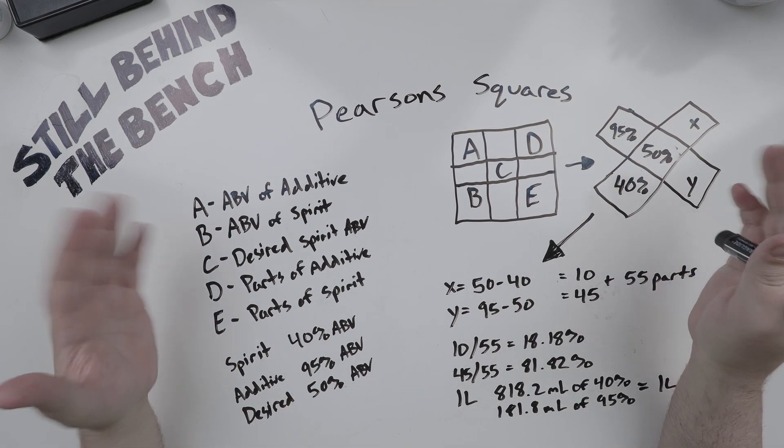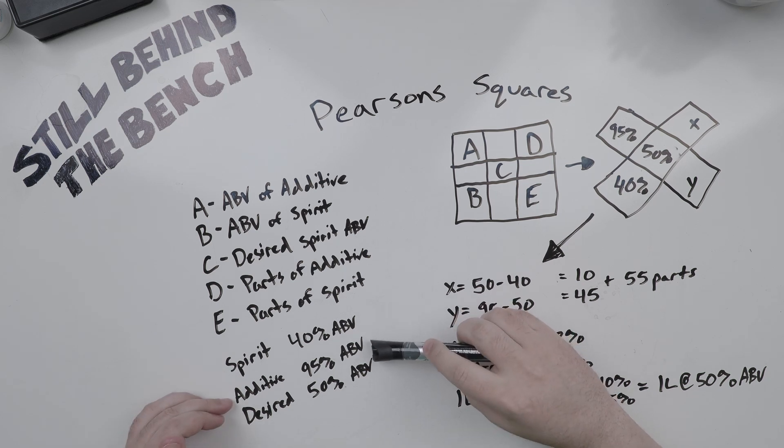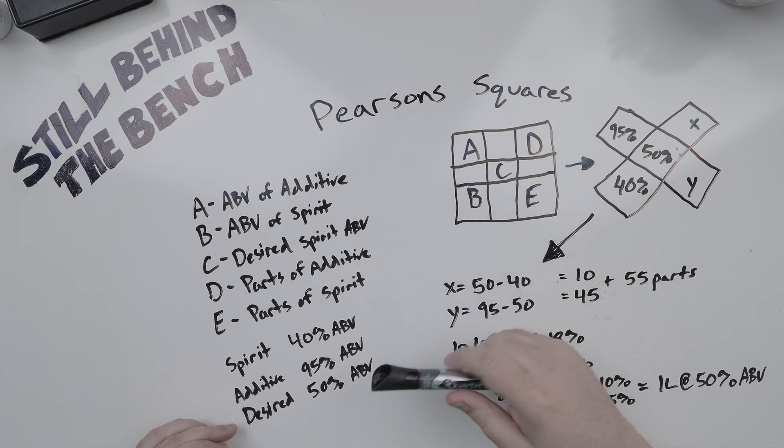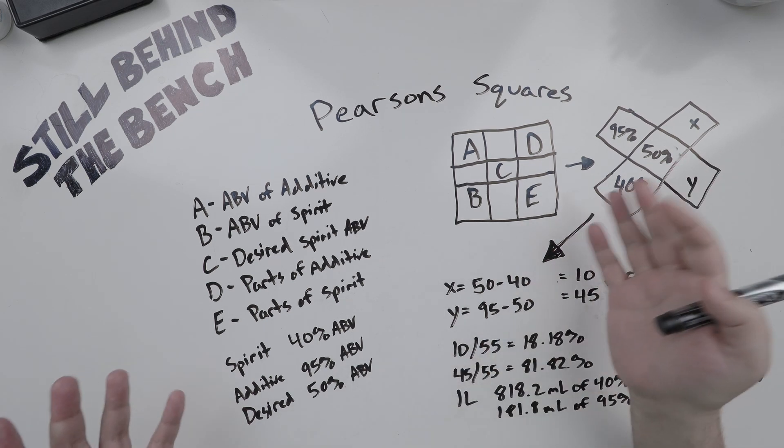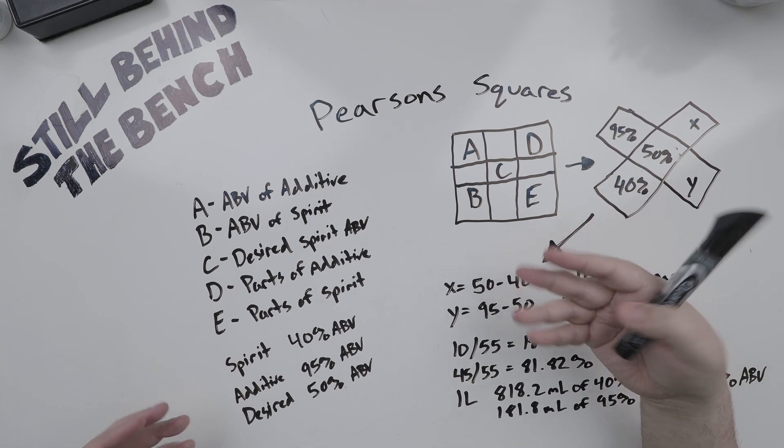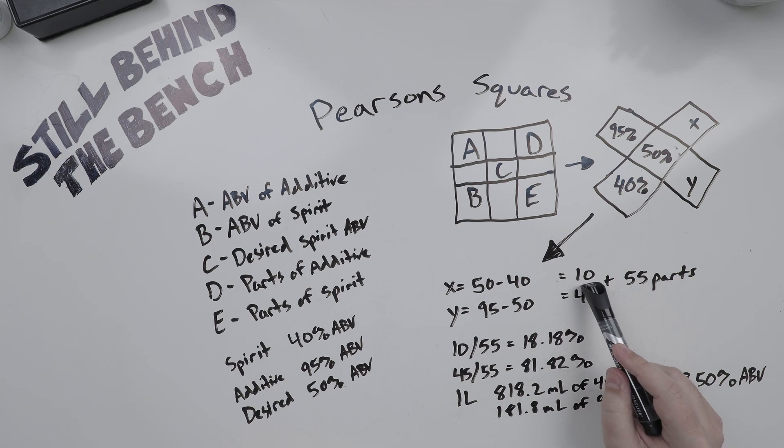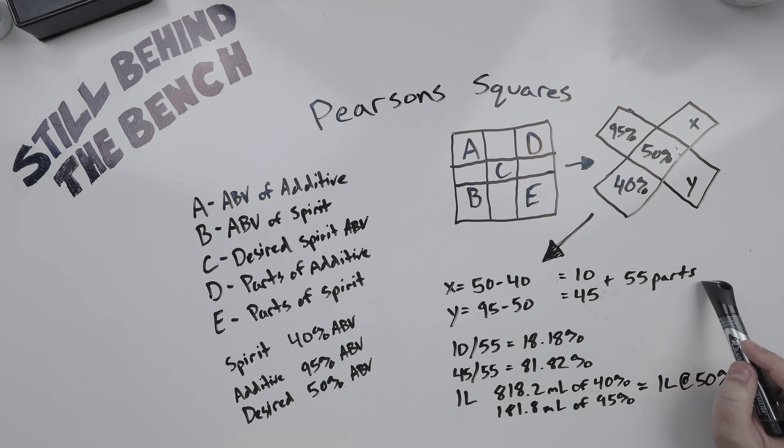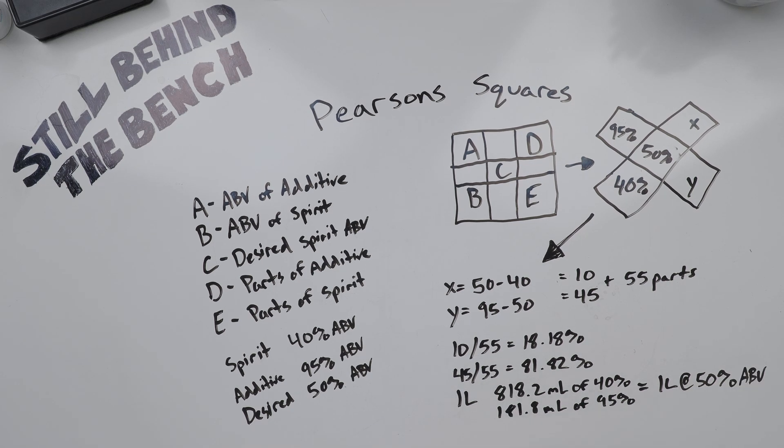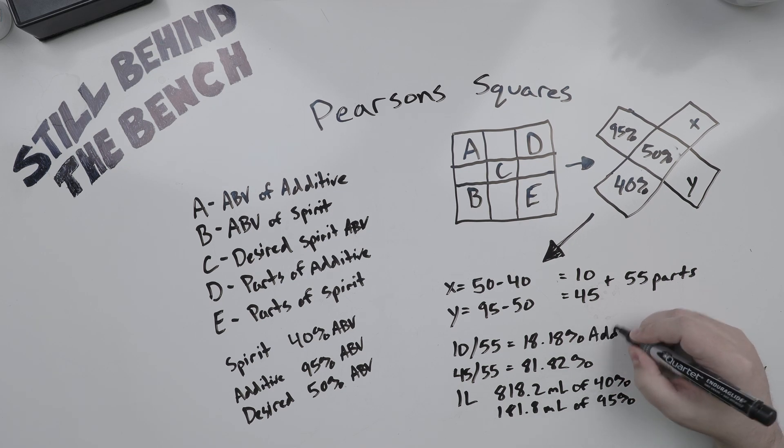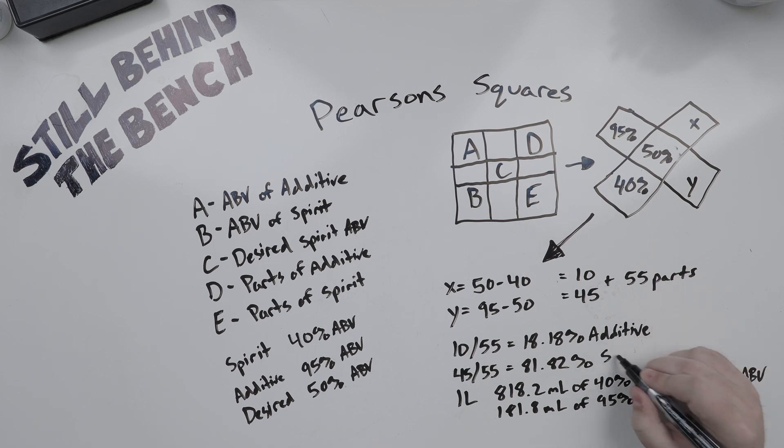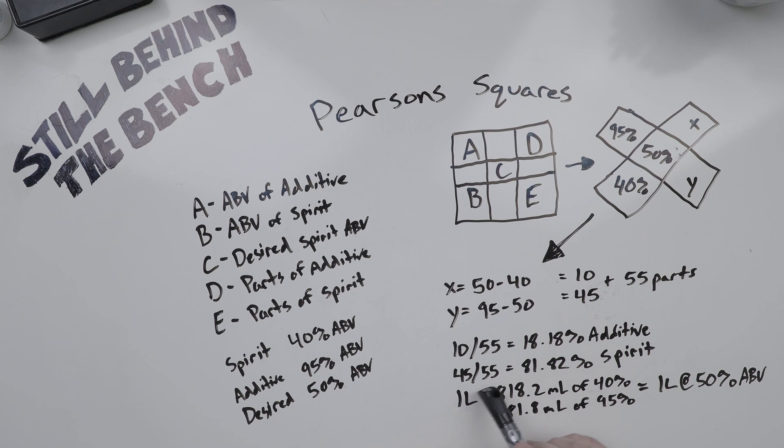Fortifying using Pearson square. This time our spirit is 40% ABV, our additive is 95% ABV like a neutral grain spirit, and we want our desired ABV to be 50%. 50 minus 40 gives us 10 parts. 95 minus 50 gives us 45 parts. So 55 parts total. Divide to find how much additive we need: 18.18% additive and 81.82% spirit. So if we wanted one liter, we'd have 818.2 milliliters of 40% and 181.8 milliliters of 95%, and that would give us one liter at 50% ABV.